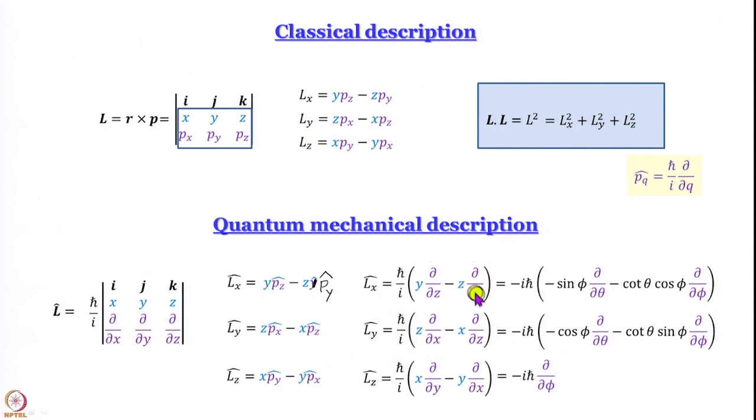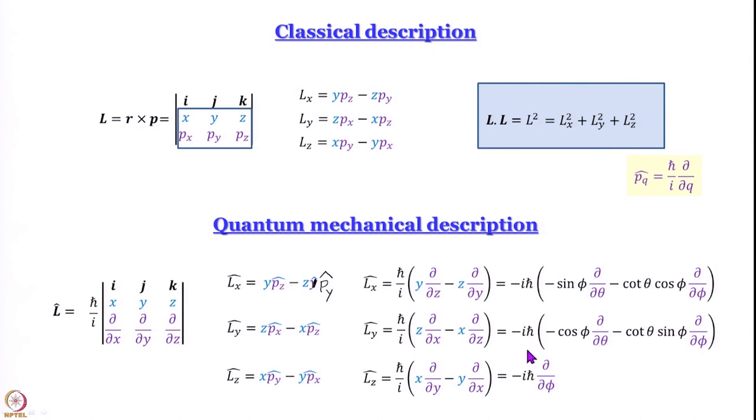L̂z is particularly simple because changing φ essentially means circular motion in the xy-plane, so the associated angular momentum must be in the z-direction. L̂z is analogous to the linear momentum operator: p̂q = ℏ/i · ∂/∂q, with q = φ. We always work with the z-direction because it is easier to handle. We will stop this module here and continue in the next.